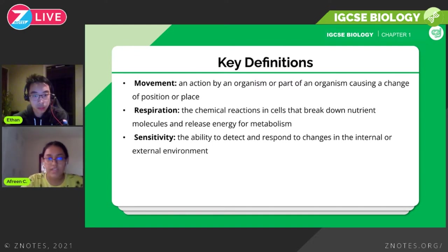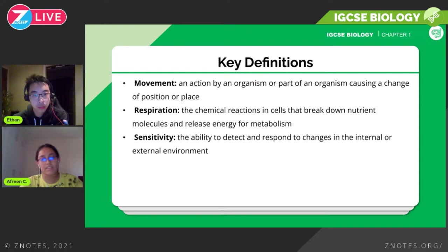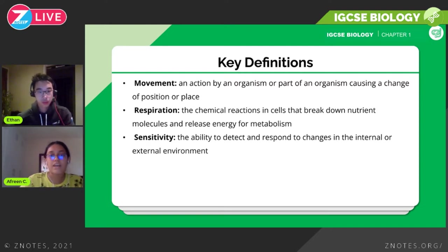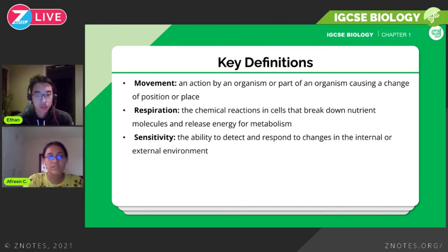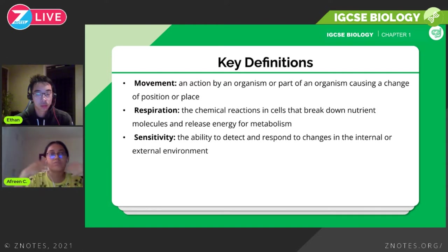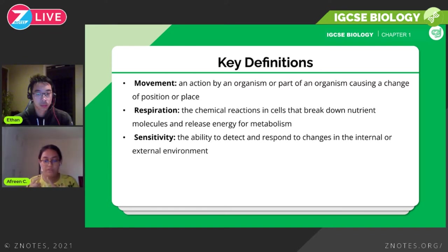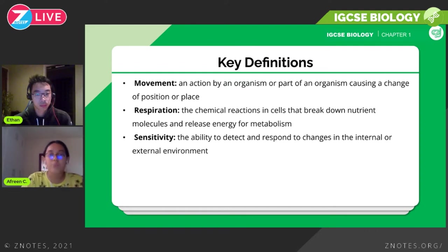Sensitivity is the ability to detect and respond to changes in the internal and external environment. This has a lot to do with homeostasis, which we'll look at deeper in another chapter. Basically it means that if something changes in the environment, you have the ability to respond to it. For example, if a pin pricks your finger, you'll involuntarily move your finger away — you're not thinking about it, it just happens.